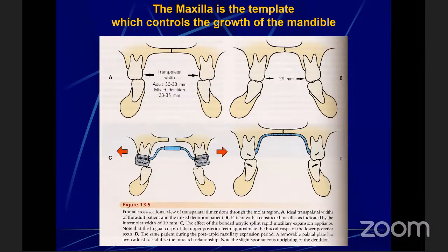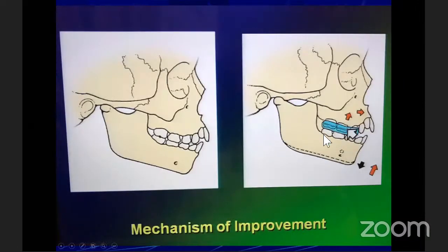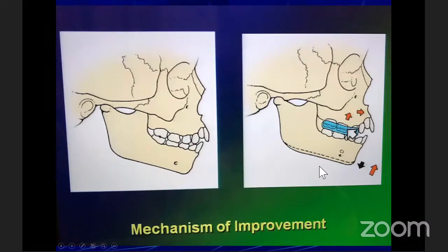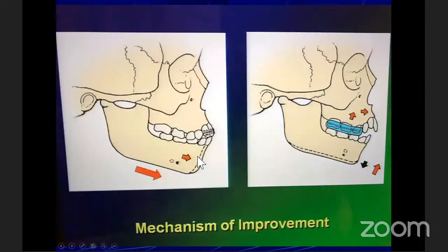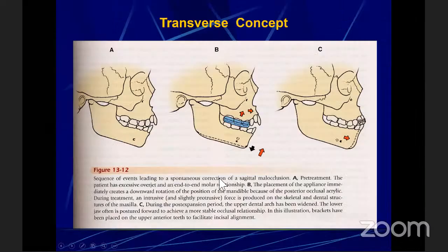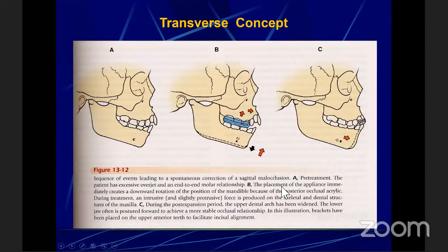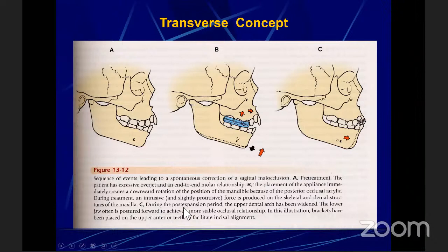Once you expand the maxilla, retain it with a palatal plate and the lower arch will upright the posteriors automatically. The maxilla is always the template. I am a great fan of bonded expanders — I learned under Jim McNamara. When we use a bonded expander, there is always a little intrusion, and after expansion the lower jaw moves forward, creating a sequence of events leading to spontaneous correction of sagittal malocclusion. Pretreatment, the patient has excessive overjet. Placement of the appliance immediately creates a downward rotation of the mandible because of the posterior occlusal acrylic. During treatment, an intrusive and slightly protrusive force is produced on the skeletal and dental structures of the maxilla.